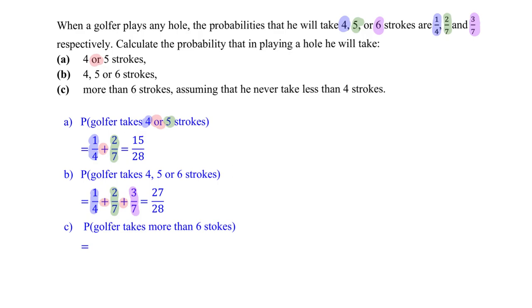Because he could take more than six strokes. We have to assume that he never takes less than four strokes, and if that is the assumption, then the total probability should be equal to one. Therefore, if the golfer takes more than six strokes,